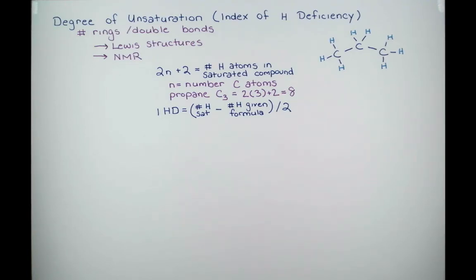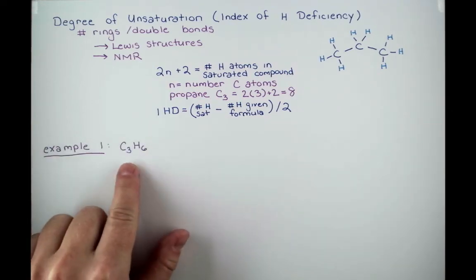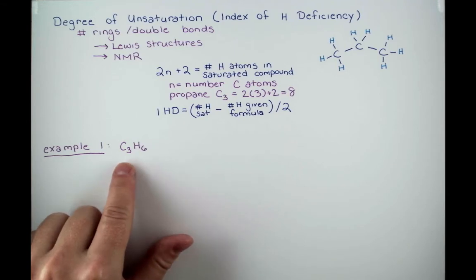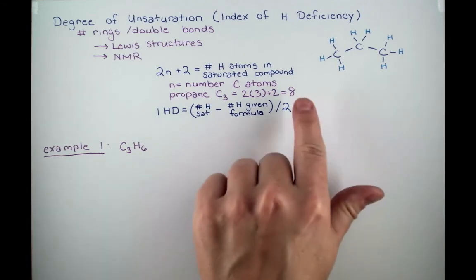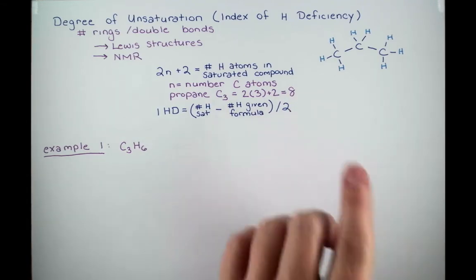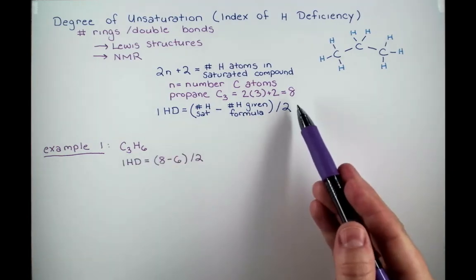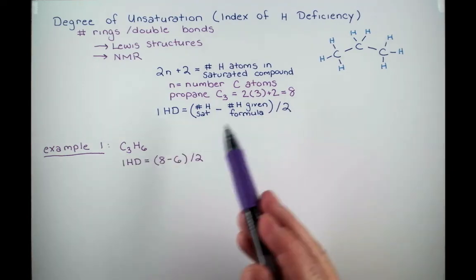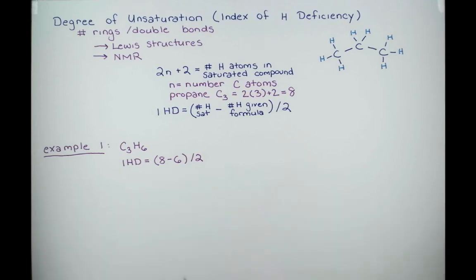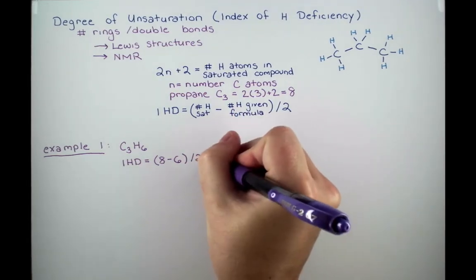Everything's so much clearer with an example. Let's take a look at a couple. Let's figure out the index of hydrogen deficiency for C3H6. Up here, we already calculated that we should have 8 hydrogen atoms in the formula, but we have 6. Let's set up our IHD equation. So 8 hydrogen atoms for the saturated compound minus the 6 in our given formula divided by 2 is 1.